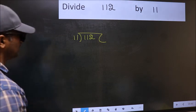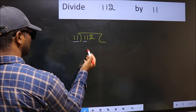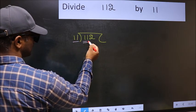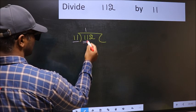Next, here we have 1 and here 11. 1 is smaller than 11, so take 2 numbers: 11. When do we get 11 in the 11 table? 11 once, 11.